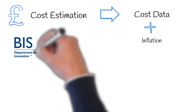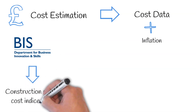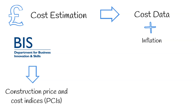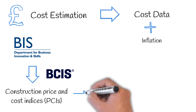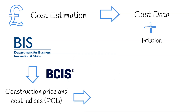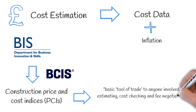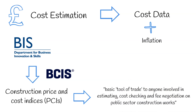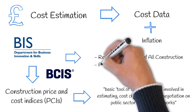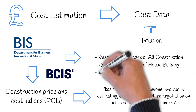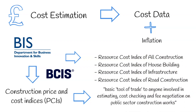For example, the Department for Business Innovation and Skills, or BIS for short, produces quarterly Construction Price and Cost Indices, or PCIs. These PCIs are published as an online service by the Building Cost Information Service, or BCIS, under contract to BIS. UK Gov states these are a basic tool of trade to anyone involved in estimating, cost checking, and fee negotiation on public sector construction works. Some of the indices produced by BCIS include the resource cost index of all construction, resource cost index of house building, resource cost index of infrastructure, and resource cost index of road construction.